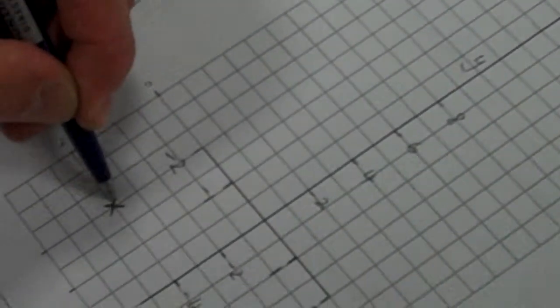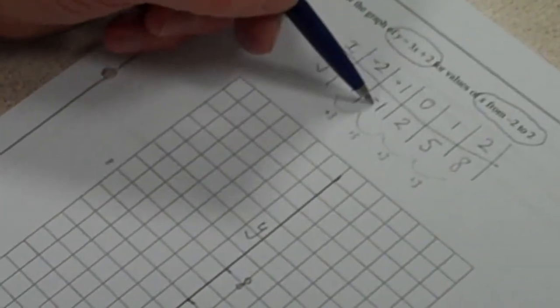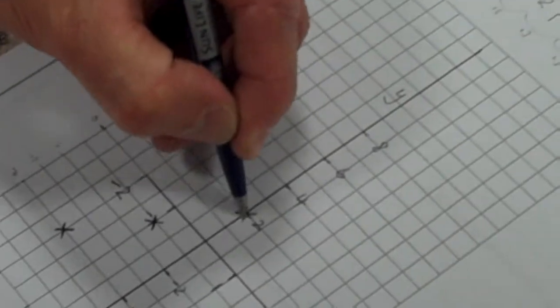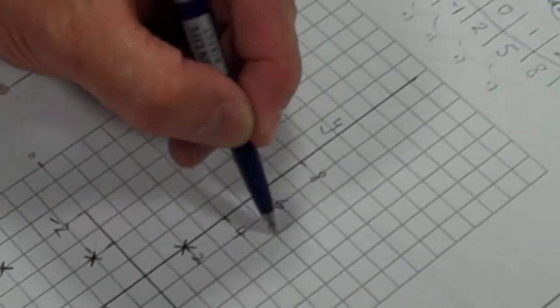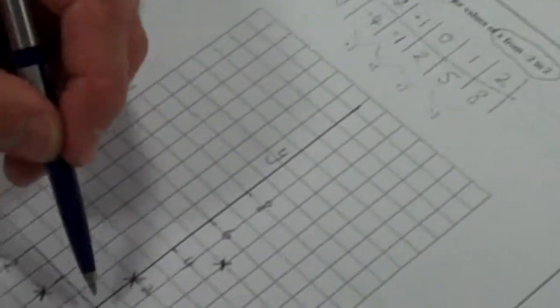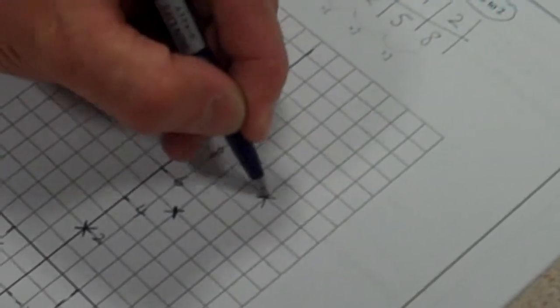But we've calculated when x is minus 2, y is minus 4. So that's this point here. When x is minus 1, y is minus 1. So that's this point here. When x is 0, y is 2. So that's this point here. When x is 1, y is 5. So that's this point here. When x is 2, y is 8.